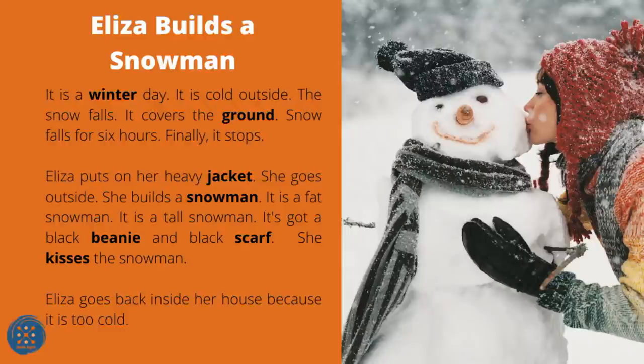Eliza Builds a Snowman. It is a winter day. It is cold outside. The snow falls and covers the ground. Snow falls for six hours. Finally it stops. Eliza puts on her heavy jacket and goes outside. She builds a snowman — it is a fat snowman, a tall snowman with a black beanie and black scarf. She kisses the snowman, then goes back inside because it is too cold.